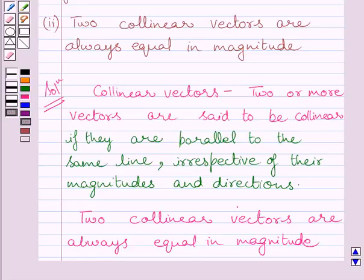By the definition of collinear vectors, two or more vectors are said to be collinear if they are parallel to the same line, whatever be their magnitudes and directions. Now here we are given two collinear vectors are always equal in magnitude.